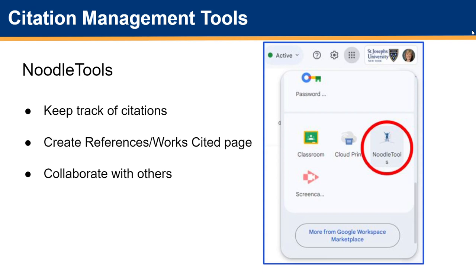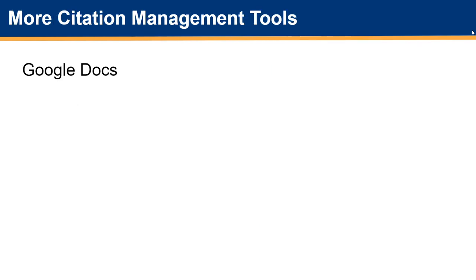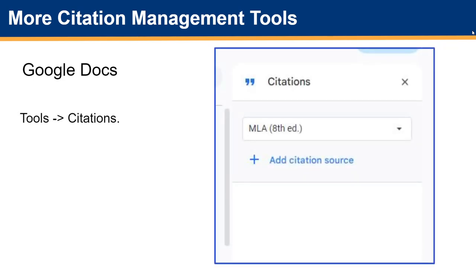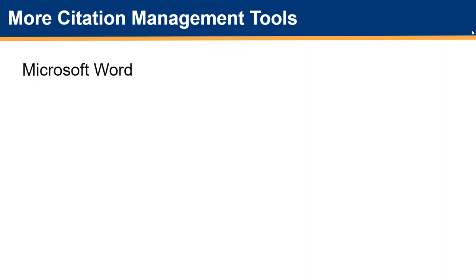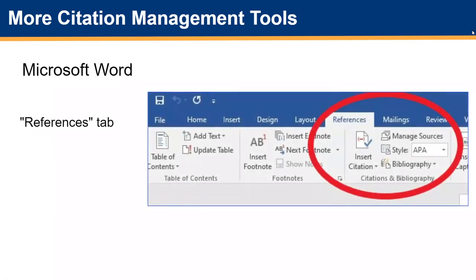While we usually recommend Noodle Tools, there are other tools out there. Two commonly used products that provide some level of citation management are Google Docs and MS Word. Google Docs includes an easy-to-use citation tool that can be found under the Tools menu. Microsoft Word also has a citation management tool, which can be found under the References tab.